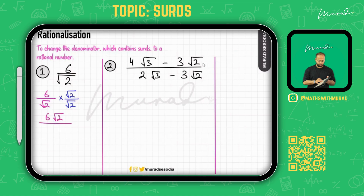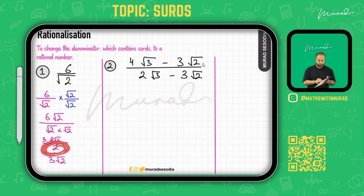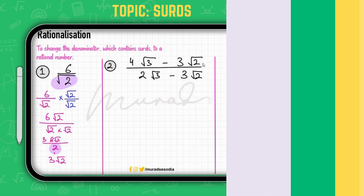Multiplying: the numerator becomes 6√2, and the denominator becomes √2 × √2 = 2 (by Rule one — same number gives just that number). So we get 6√2 / 2, which simplifies to 3√2. That is the process of rationalization.